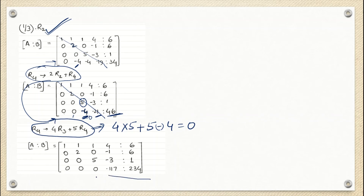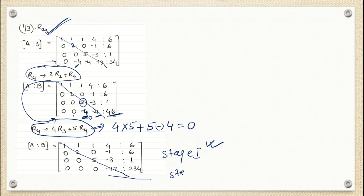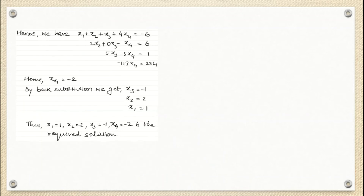Now I am going to stop here. This matrix has become the upper triangular matrix, so stage 1 — forward elimination — is completed. Now I start stage 2. With this equivalent matrix, I write down the equation form. The first equation is: X1 + X2 + X3 + 4X4 = minus 6.